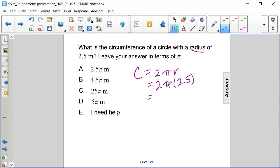We treat pi as a variable and leave it in our answer, and we multiply two times two and a half which is five.